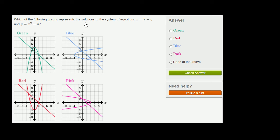Which of the following graphs represents the solutions to the system of equations x = 2 - y and y = x² - 4? Essentially, you want to find the graphs that represent these two equations, and where they intersect represents the solutions.